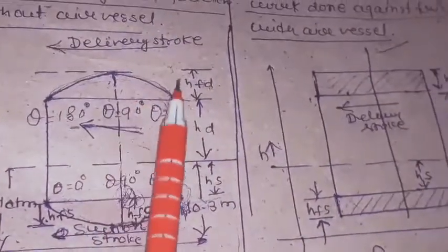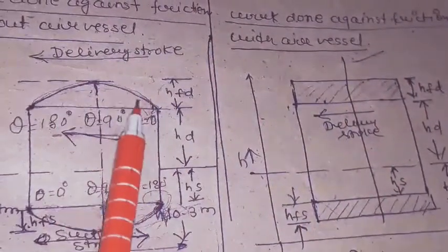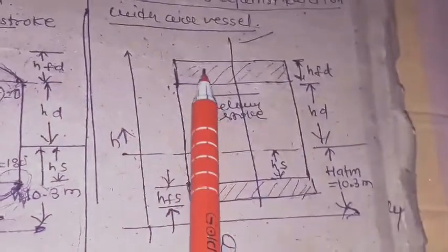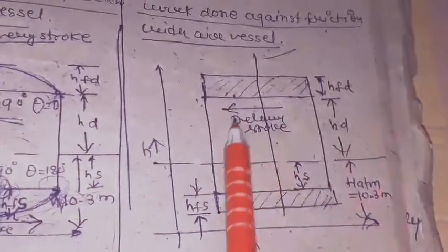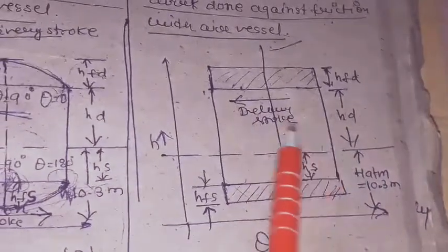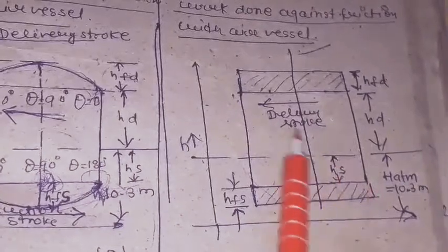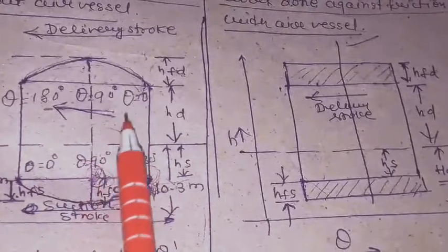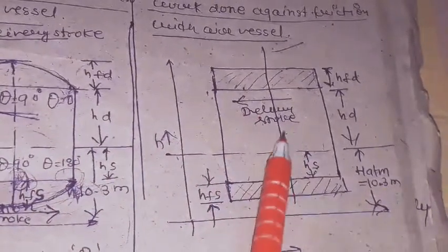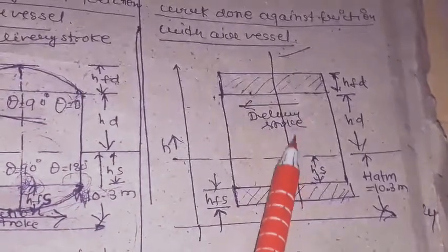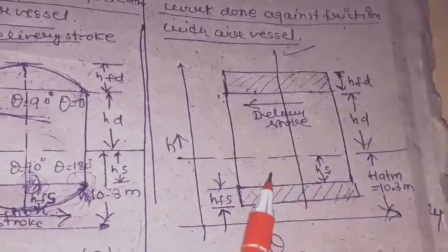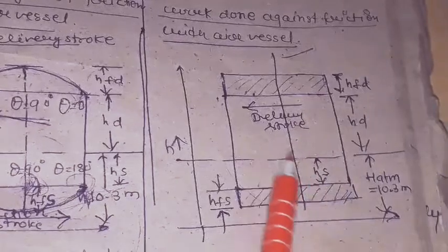When the air vessel is used, the parabola segment of the indicator diagram is converted into a rectangle segment. As a result, the area of the indicator diagram becomes larger than when the air vessel is not used. This greater area of the indicator diagram means we get a larger value of work done per second.